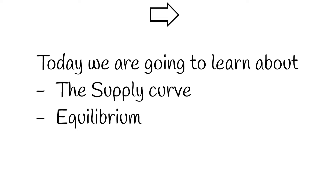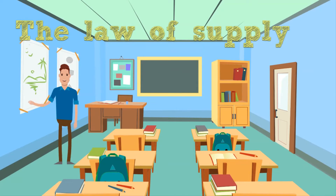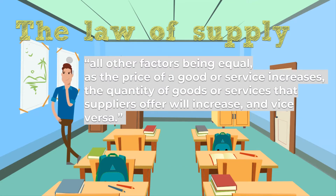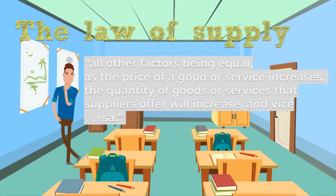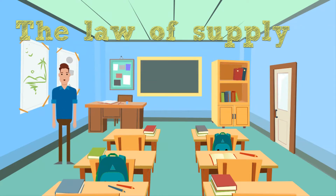The law of supply states: all other factors being equal, as the price of a good or service increases, the quantity of goods or services that suppliers offer will increase, and vice versa. The law of supply says that as the price of an item goes up, suppliers will attempt to maximize their profit by increasing the quantity offered for sale.